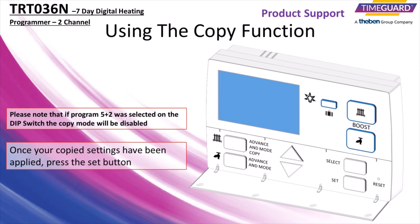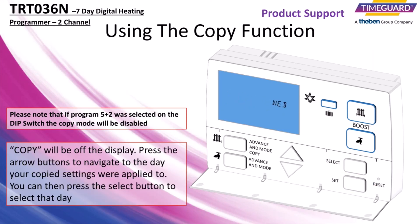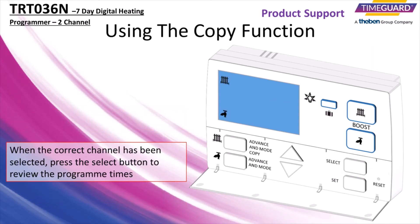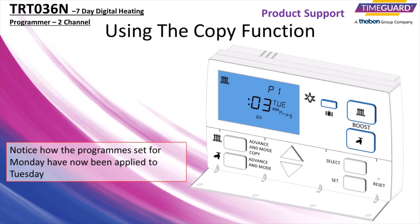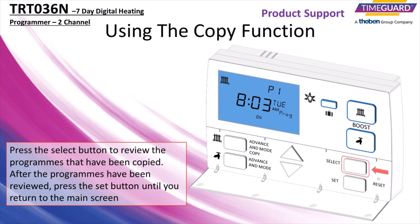Once your copied settings have been applied, press the set button. Copy will be off the display. Press the arrow buttons to navigate to the day your copied settings were applied to. You can then press the select button to select that day. When the correct channel has been selected, press the select button to review the program times. Notice how the programs set for Monday have now been applied to Tuesday. Press the select button to review the programs that have been copied. After the programs have been reviewed, press the set button until you return to the main screen.